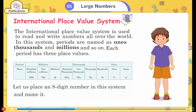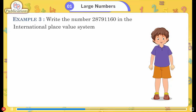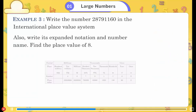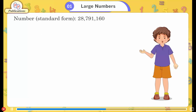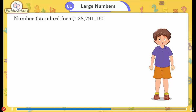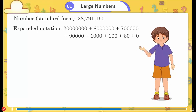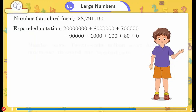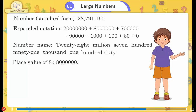Let us place an 8-digit number in the international place value system and name it. Example 3: Write the number 28,791,160 in the international place value system. Also write its expanded notation and number name. Find the place value of 8. Expanded notation: 20,000,000 + 8,000,000 + 700,000 + 90,000 + 1,000 + 100 + 60 + 0. Number name: twenty-eight million seven hundred ninety-one thousand one hundred sixty. Place value of 8: 8 million.